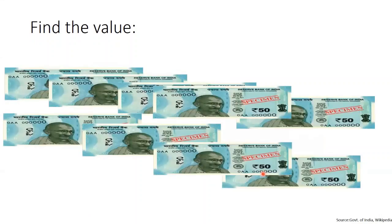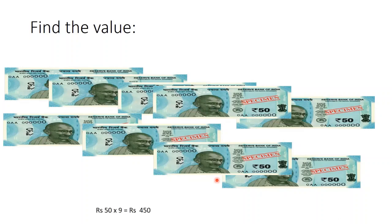Here, can you find the total value? There are 1, 2, 3, 4, 5, 6, 7, 8, 9 — nine 50 rupee notes. Therefore, the total value is rupees 50 plus rupees 50 plus rupees 50, and so on 9 times, which is 9 into rupees 50. Therefore, the total value will be rupees 450.